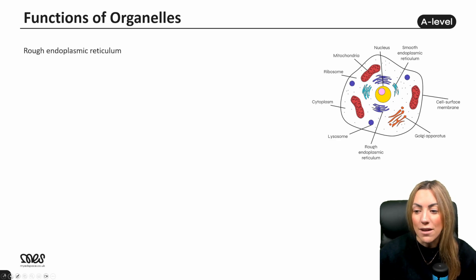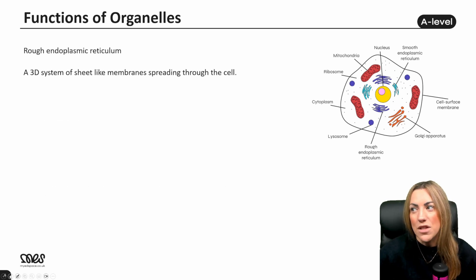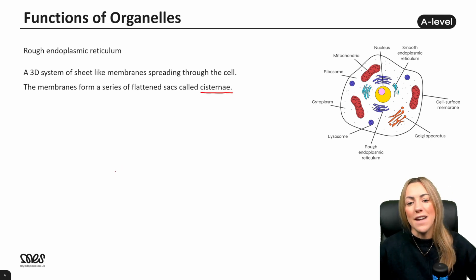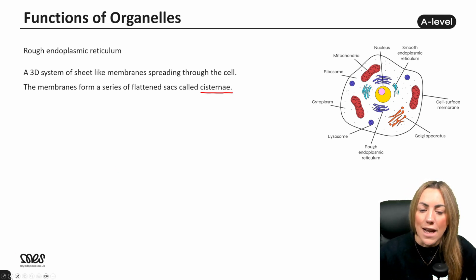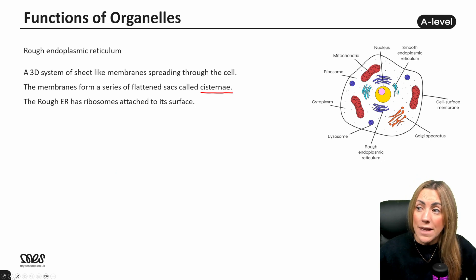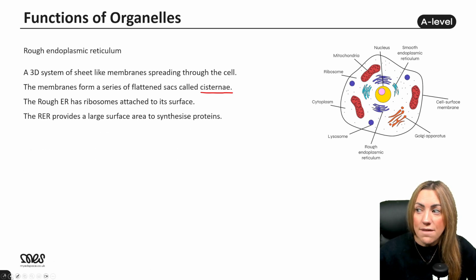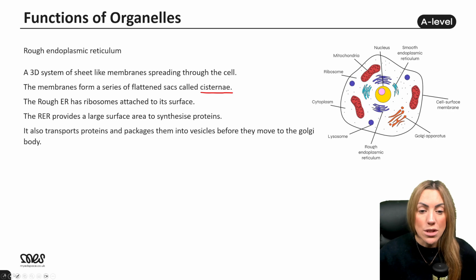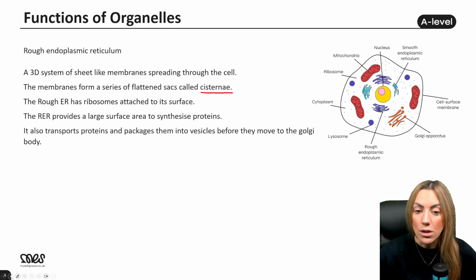The rough ER is a 3D system of sheet-like membranes spreading throughout the cell. The membranes form a series of flattened sacs, which we can call cisternae. It's rough because it has ribosomes attached to its surface. It provides a large surface area to synthesize proteins. It also transports those proteins and packages them into vesicles for transport to the Golgi body.